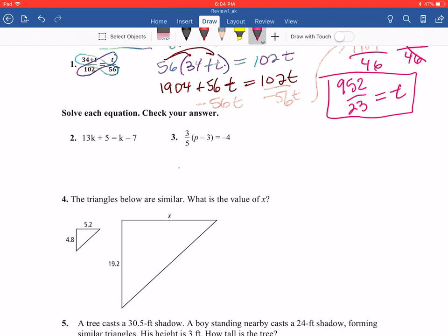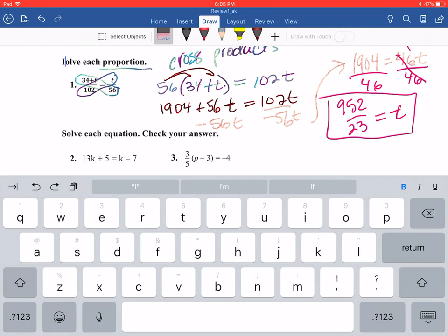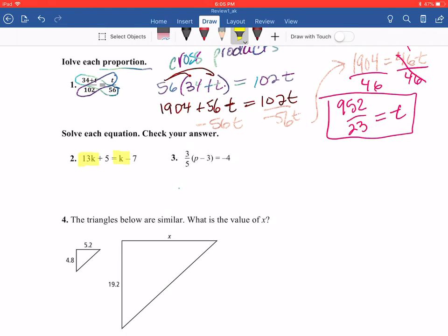All right. Now let's look at number two. Number two says to solve each equation and check your answer. So now I'm going to combine all the variables on one side, all the constants on the other. I have a variable and a variable and I have a constant and a constant. So let me highlight—a variable, variable, and I have a constant here and a constant there. I'm going to move my variable. In order to move my variable, I need to subtract. I'm going to subtract the 13.